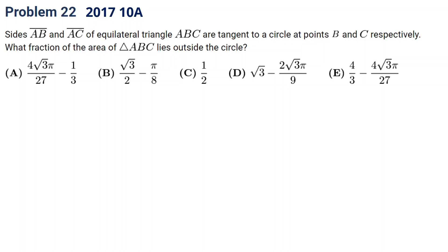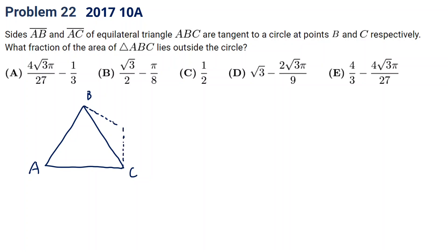Let's draw this question. It's an equilateral triangle ABC. The circle is tangent to sides AB and BC at points B and C respectively — so there are two perpendicular lines at those points connecting to center O. The question asks what fraction of the area of triangle ABC lies outside the circle.